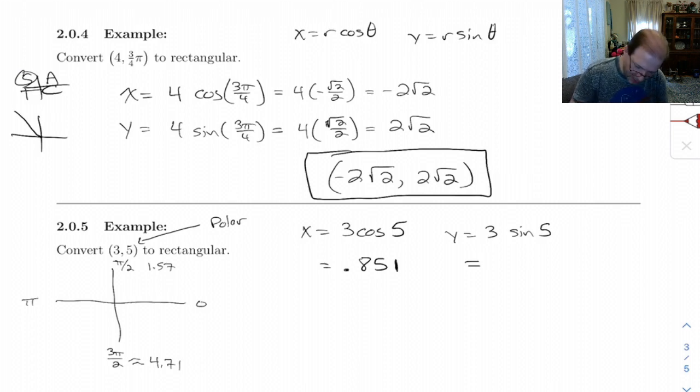My calculator's telling me that's negative 2.877. Okay, wait a second. 3 cosine 5. Yeah, yeah, that's right. That's right. So these are my coordinates.